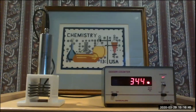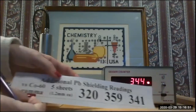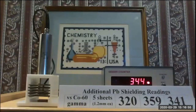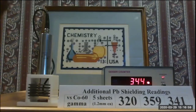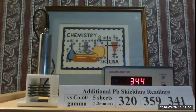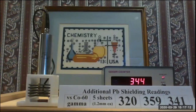344 is our second reading. So 363, 344, and three additional readings give us our final readings for five sheets. I'll give you just a moment to write those down.